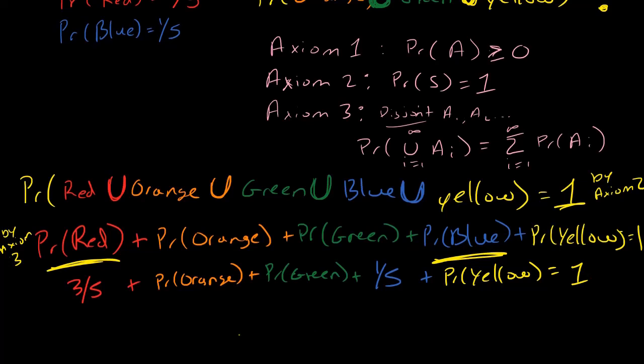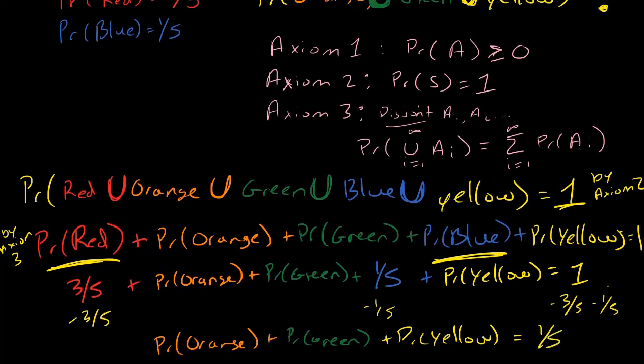Basically subtract 3 fifths and 1 fifth from both sides of my equation, and what I'll have is the probability of orange plus the probability of green plus the probability of yellow equals 1 minus 3 fifths minus 1 fifth, which would be 1 fifth.